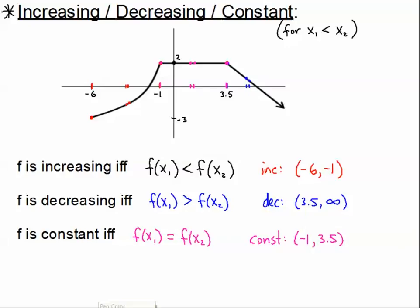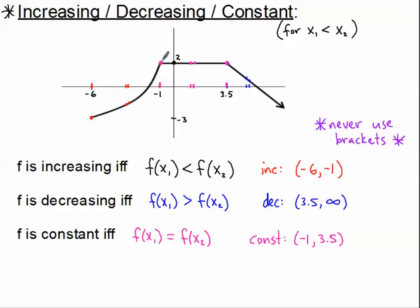One last little note: you'd see that I have not used brackets. When we're talking about increasing, decreasing, and constant, we never use brackets. Because we're never going to be increasing, decreasing, or constant at a single point — it's always over an interval of values. Think about it like this: let's say you start walking up a staircase. As you start walking up, you are increasing along that interval. But if you stop in the middle of that staircase at that single point, you are not doing anything — you're not increasing, you're not decreasing, you're not constant. You are increasing along an interval of values, so we do not include the endpoints. We will always be using parentheses.